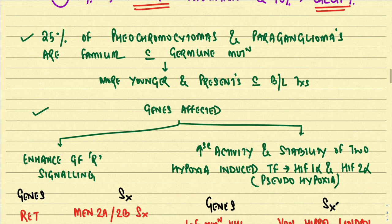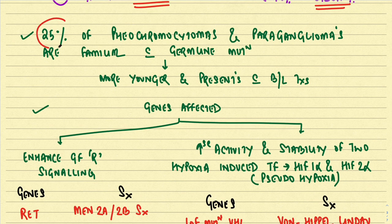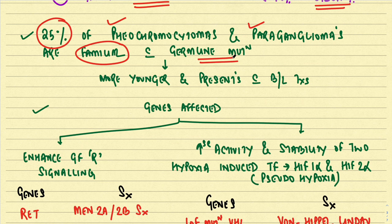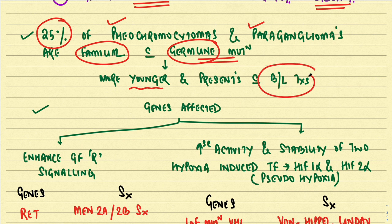Approximately 25% of pheochromocytomas and paragangliomas are familial, with germline mutations inherited from parents or grandparents. These germline mutations are present in 25% of all pheochromocytomas and paragangliomas. Patients with familial germline mutations tend to be younger than usual and commonly present with bilateral tumors — around 50% of such patients present with bilateral disease.